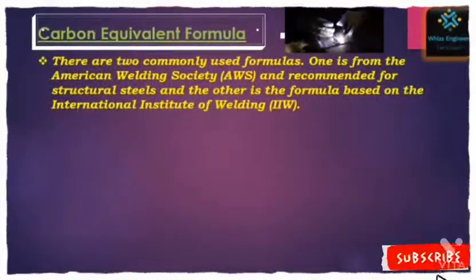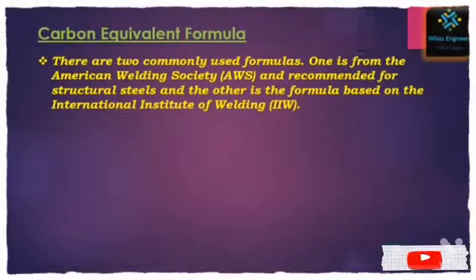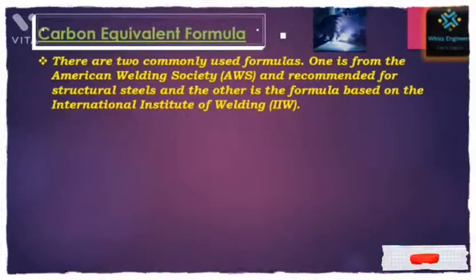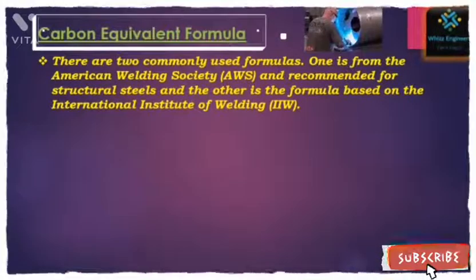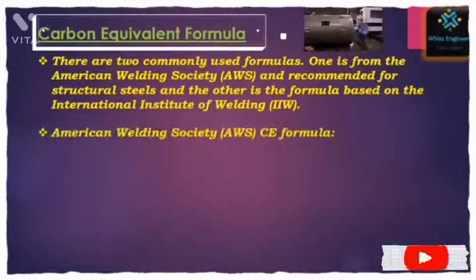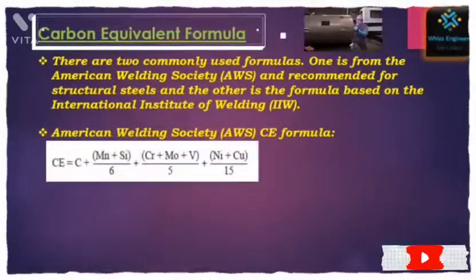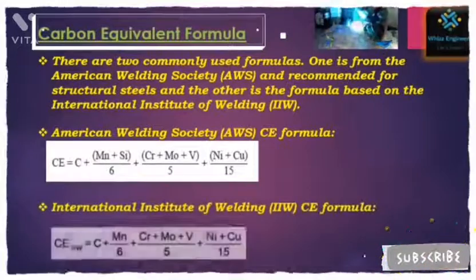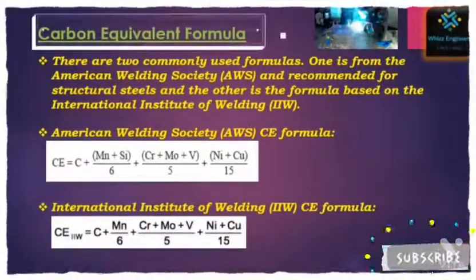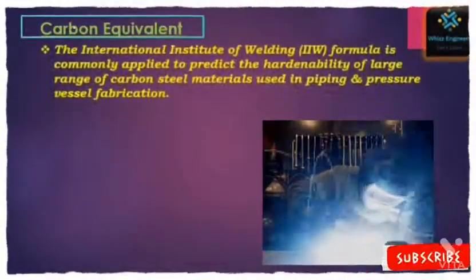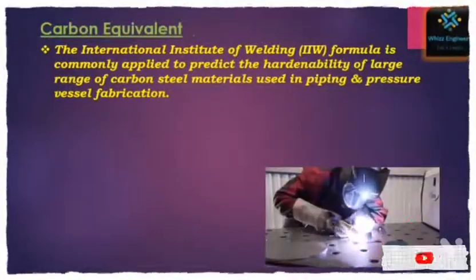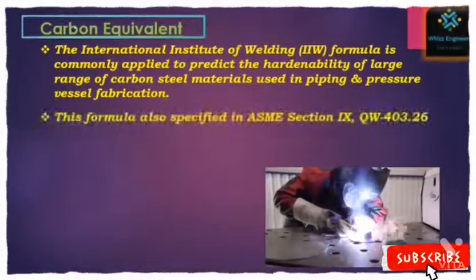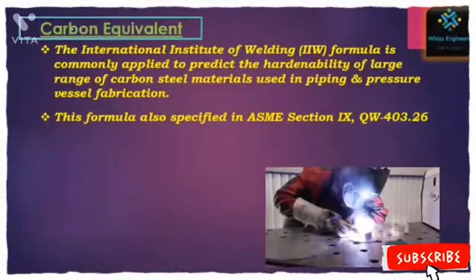There are two commonly used formulas: one is from the American Welding Society, recommended for structural steels, and the other is based on the International Institute of Welding. Both formulas are given below. The International Institute of Welding formula is commonly applied to predict the hardenability of a large range of carbon steel materials used in piping and pressure vessel fabrication.